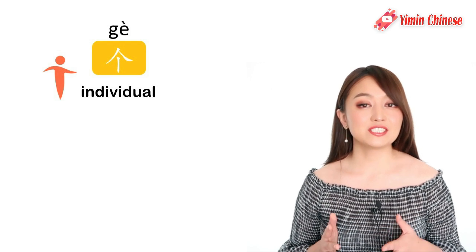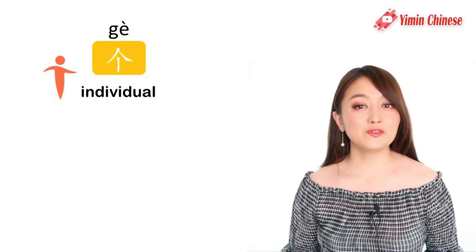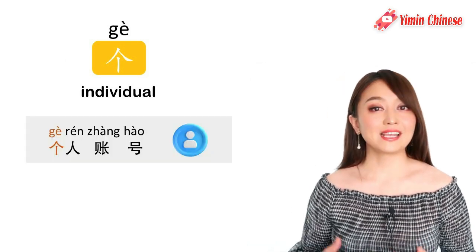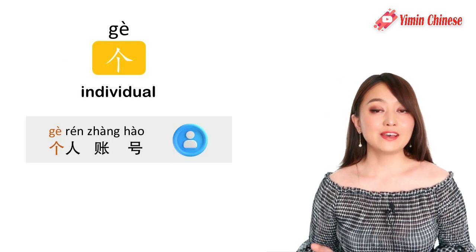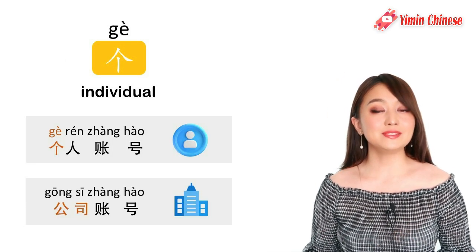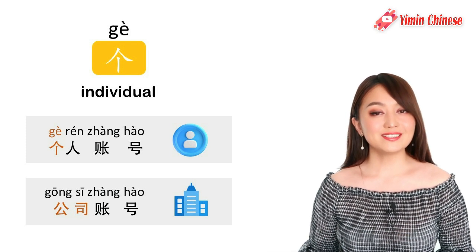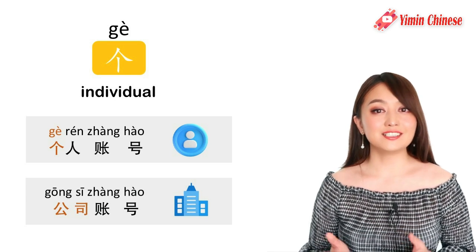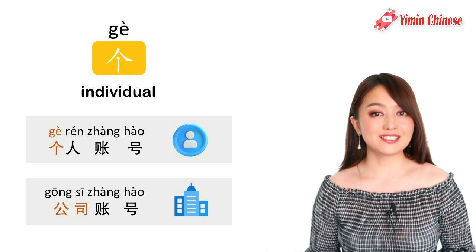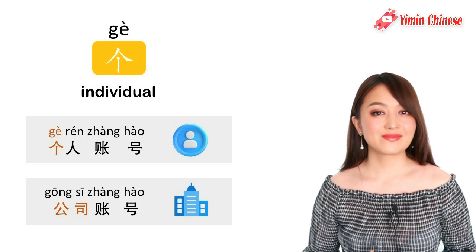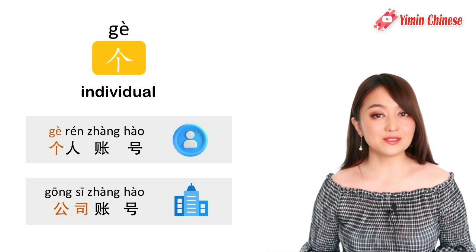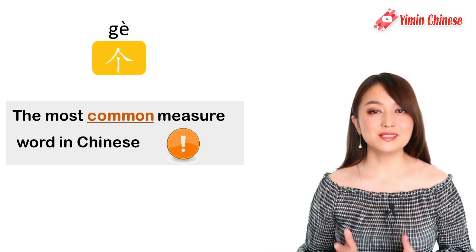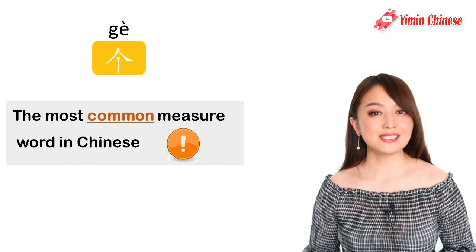Like 个 — the character 个, before being chosen as a measure word, means 'individual.' Like when you sign up on a website, you have a personal account or company account. Personal account is 个人账号. 个人 means individual person. That is the original meaning of 个, and that's why it's chosen as the most common measure word for individual items.